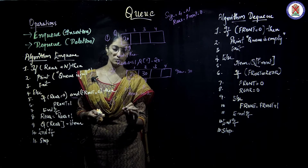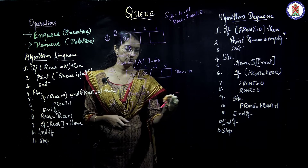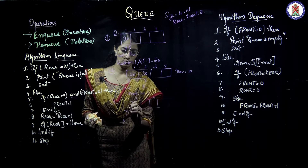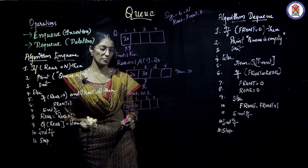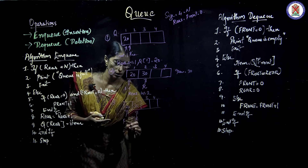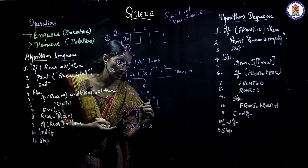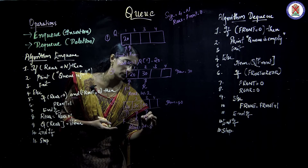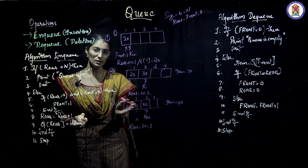Now the third insertion. Front is naturally pointing to the first index, with values 20 and 30 in the array. Rear was pointing to 30. For the third insertion, the value of rear becomes 2 plus 1 equals 3. The item is 40, so Q of rear equals 40, and rear is now pointing to 40. Rear is always pointing to the last newly inserted value.